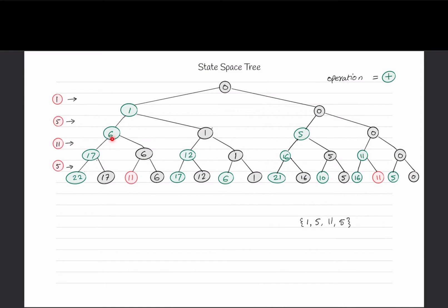For element 5: either add it to the solution or not. If we add it we get 6; if we don't, the sum remains 1. For the next level with element 11: if we add it we get 17, if we don't we stay at 6. For the next element 5: if we add it we get 22, if we don't we get 17. All positive integers sum to 22, so dividing by 2 gives us the target of 11.